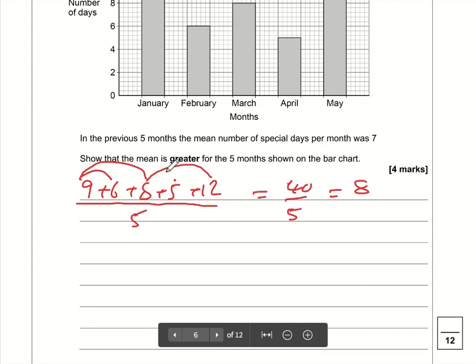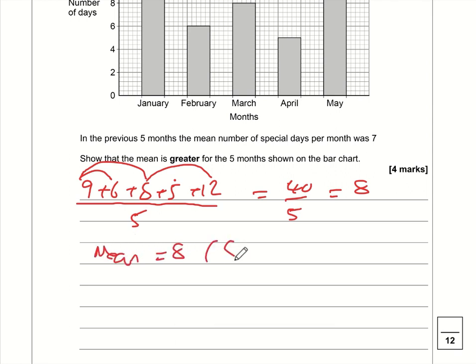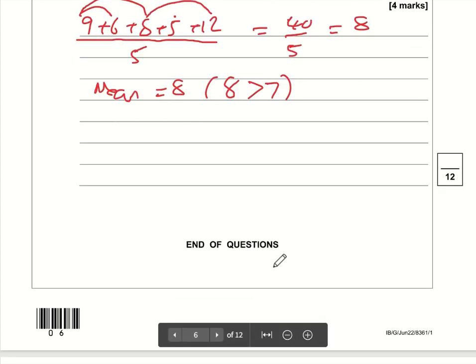There we go. So the mean is 8, and of course 8, that is more than 7. And that takes us to the end of the paper.